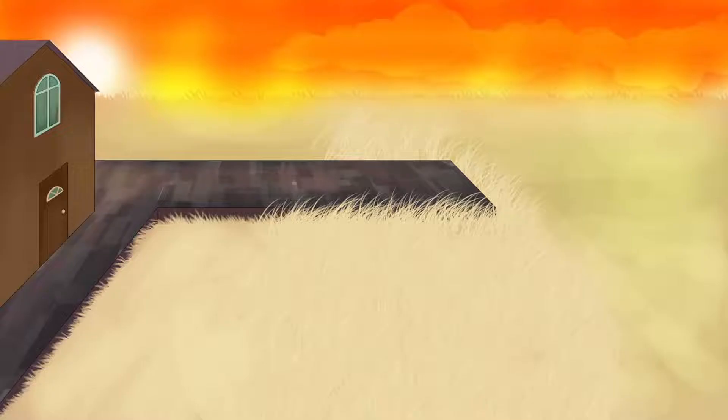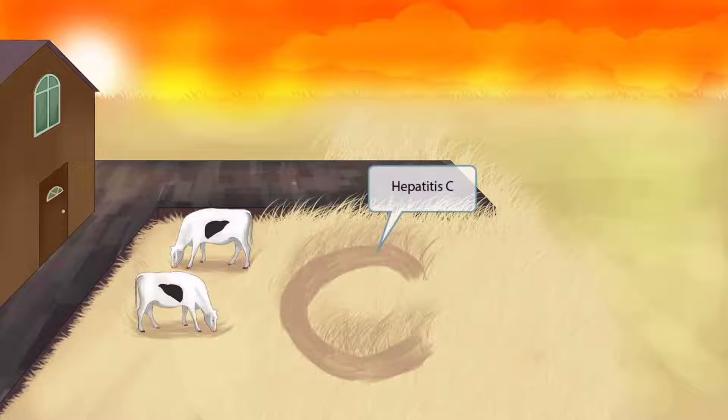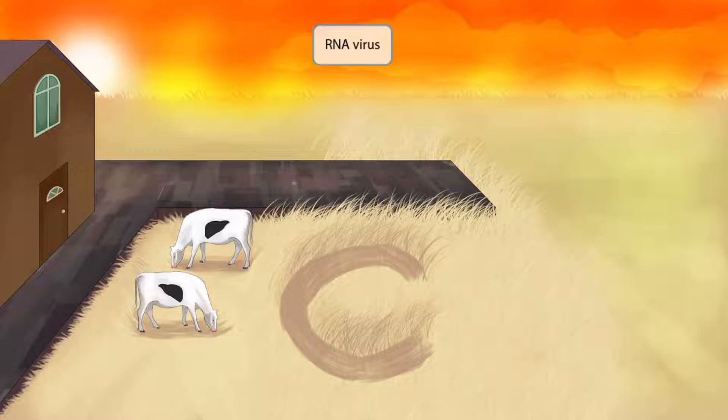Our hepatitis C story takes place in a pretty pasture outside this house. Recently, crop circles have appeared as a result of some alien invaders. The shape is a C, as in hepatitis C. We have some cows over here with big liver-shaped spots. These liver-shaped spots help you think of the liver, which is the site of pathology for hepatitis C. Notice the red warm color scheme here — as with other virus videos, a red warm color scheme represents RNA viruses.